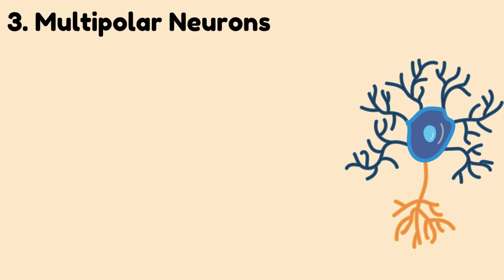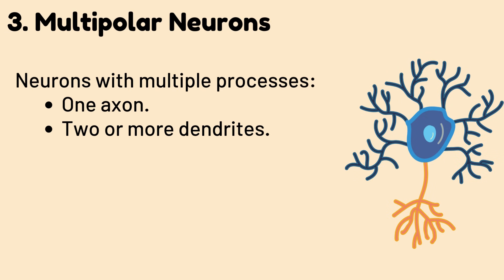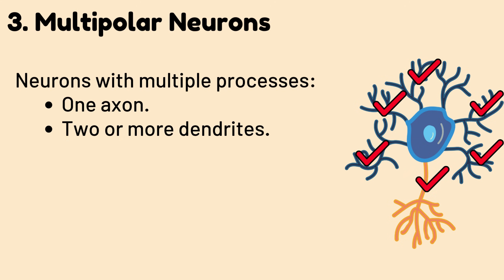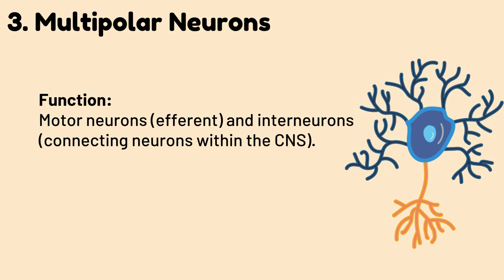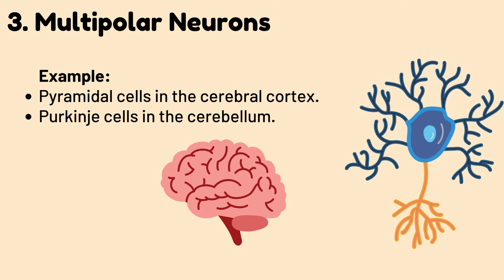Number three: multipolar neurons — neurons with multiple processes: one axon and two or more dendrites. They are predominantly found in the central nervous system. These function as motor neurons and interneurons — for example, pyramidal cells in the cerebral cortex and Purkinje cells in the cerebellum.